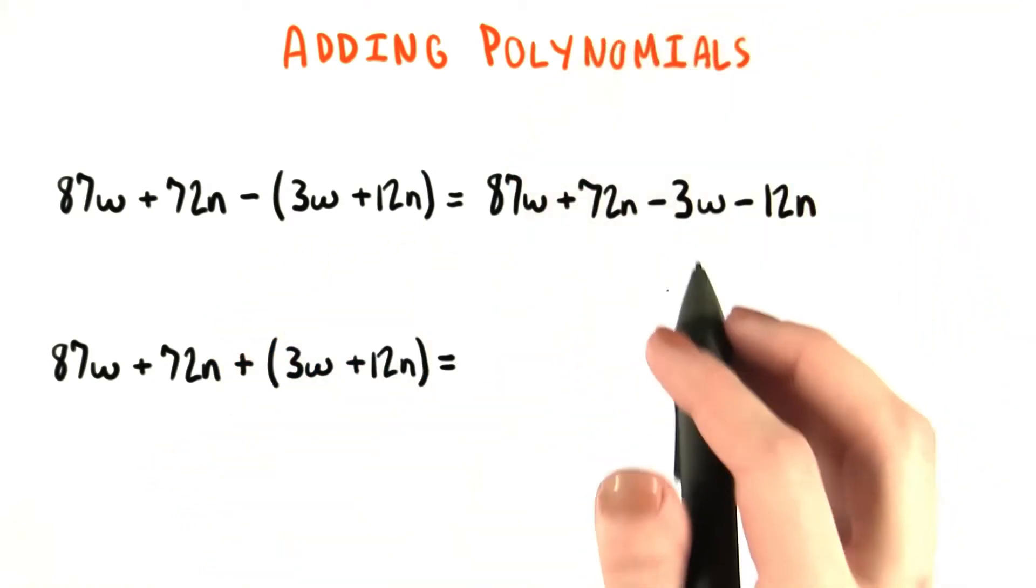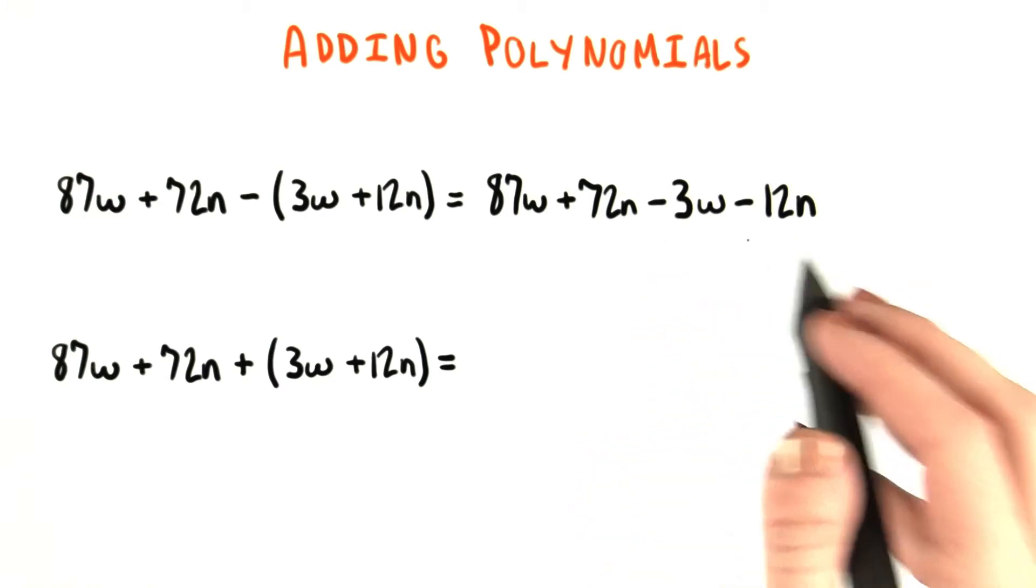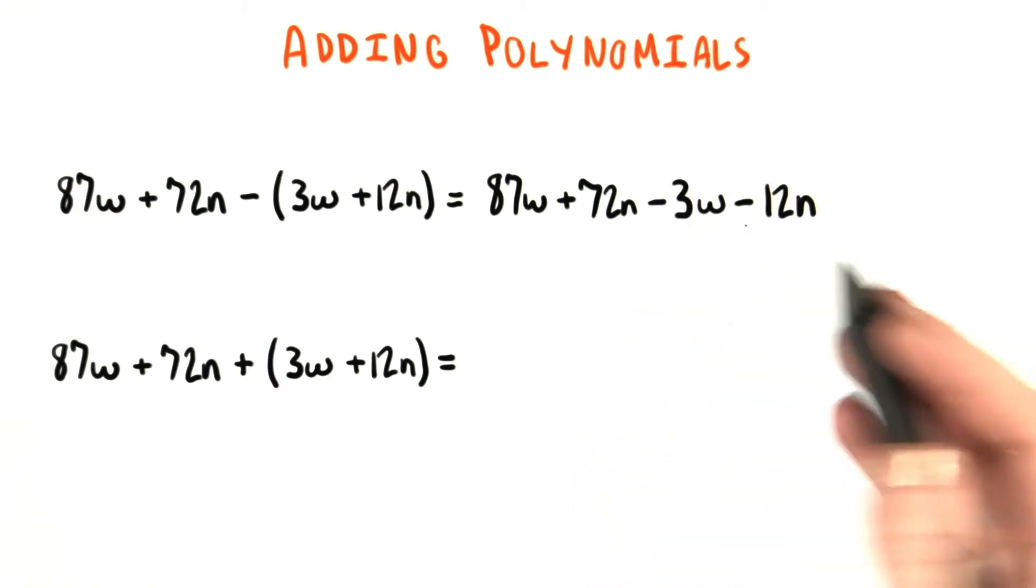So here's what we ended up with. We said that we need to subtract both the 3w and the 12n, so both of them have minus signs in front of them now.